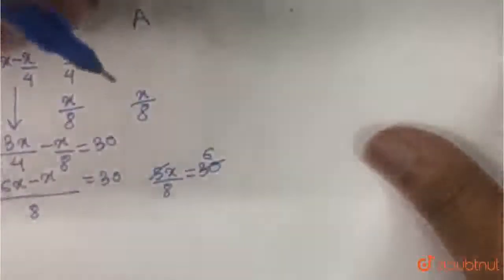5 gets cancelled out. This is 6. So X is equal to 48.